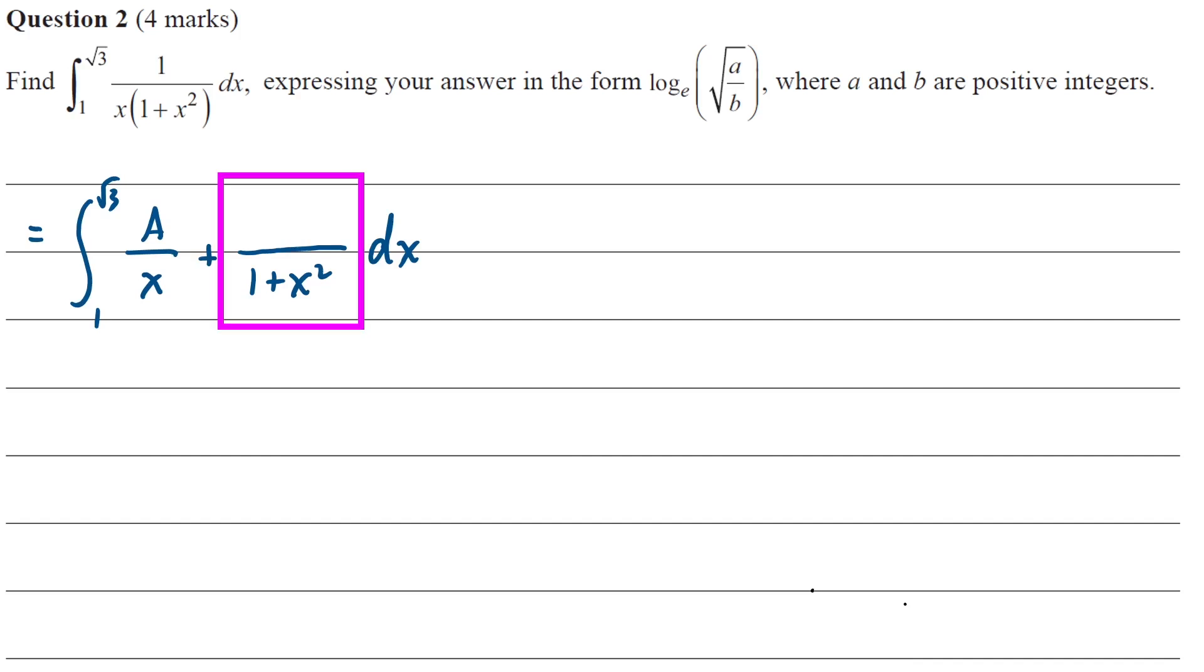And for that second fraction, it's got a 1 plus x squared on the denominator, we'll need a bx plus c on the top. If we have a quadratic denominator and we can't factorize it, we need a linear numerator, so ax plus b, bx plus c, cx plus d, whatever. We set up our equation in order to solve a, b, and c.